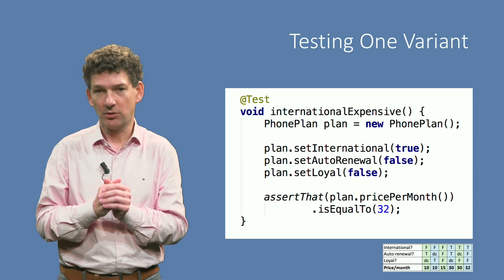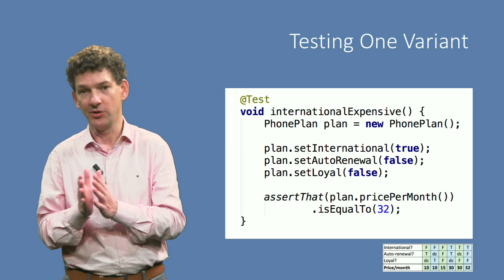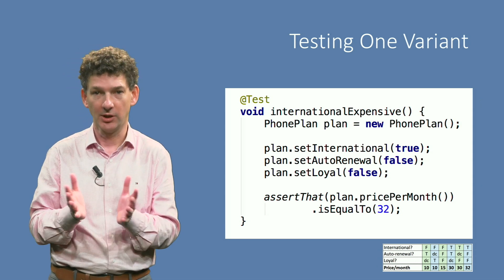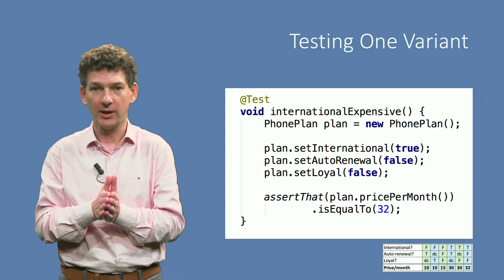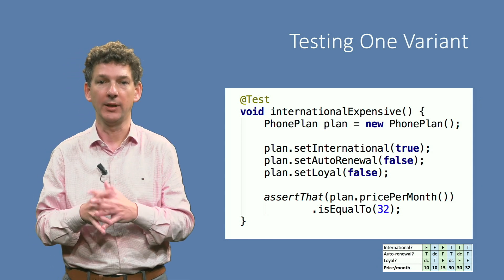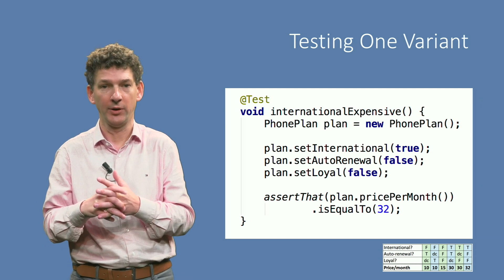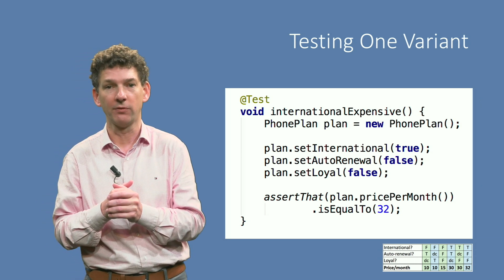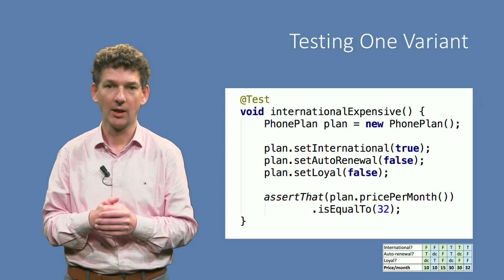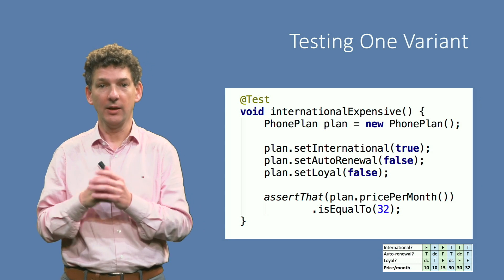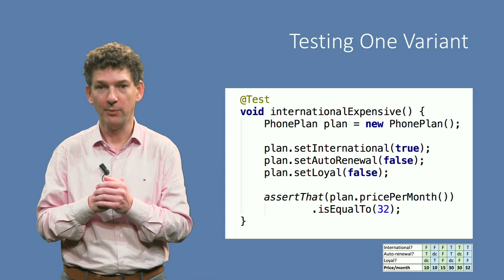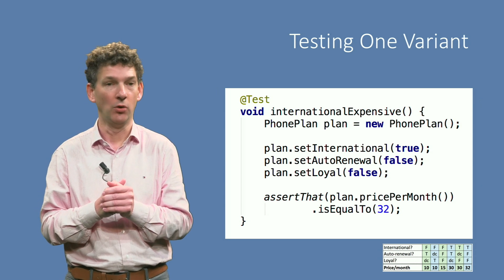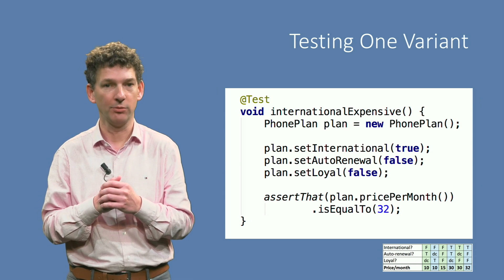To get better coverage of the decision table, you can add more test cases like this. For example, we can add three more test cases for the outcomes 10, 15, and 30, giving us modified condition decision coverage, if you do it right. This then results in four implemented test cases that do a good job in testing all eight possibilities.